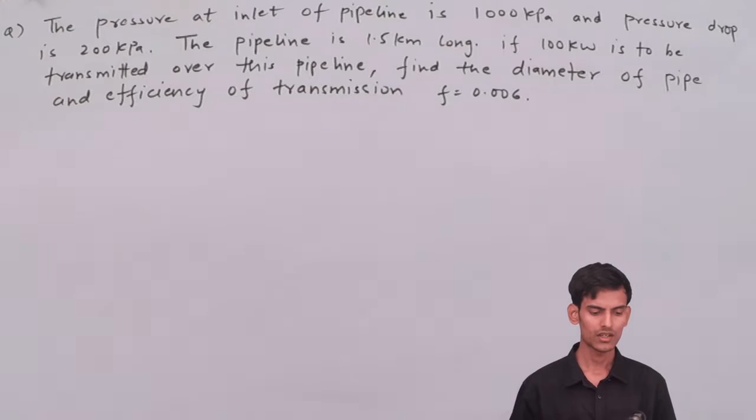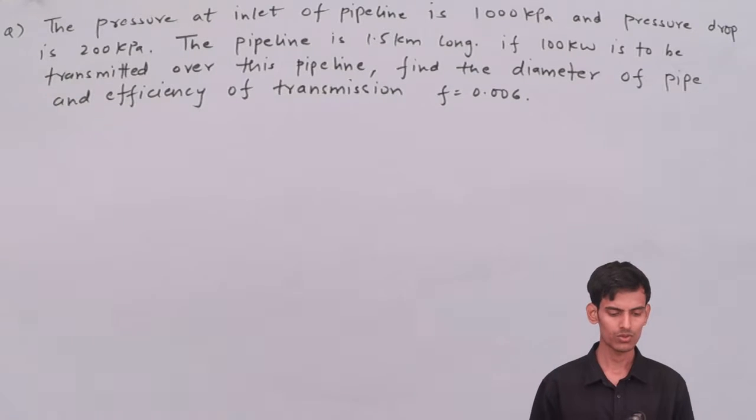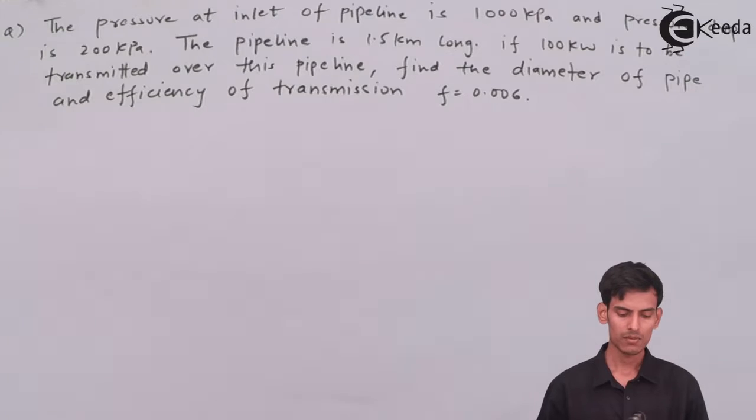Let me read out the question for you. The pressure at the inlet of pipe is 1000 kPa and the pressure drop is 200 kPa. The pipeline is 1.5 km long. If 100 kW is to be transmitted over the pipeline, find the diameter of the pipe and efficiency of transmission.